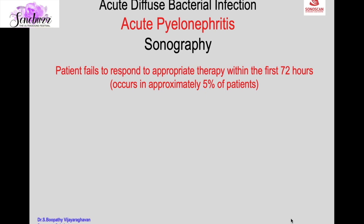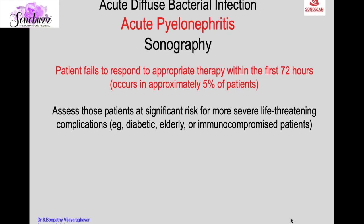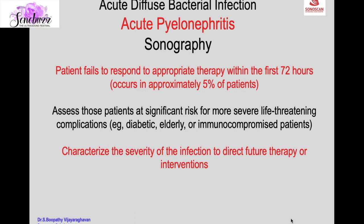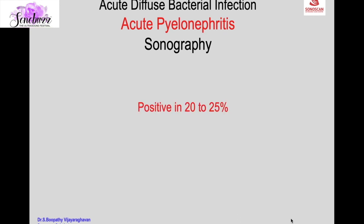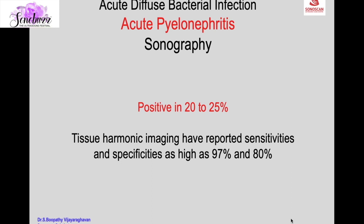Ultrasound is required when the patient fails to respond to appropriate therapy within the first 72 hours, occurring in approximately 5% of cases of acute pyelonephritis. Its role is to assess patients at significant risk for severe life-threatening complications like diabetes, elderly, or immunocompromised patients, and to characterize the severity of infection, direct future therapy or interventions, and evaluate the extent of organ damage subsequent to resolved acute infection. Ultrasound is positive in 20 to 25% of acute pyelonephritis; tissue harmonic imaging has improved sensitivity and specificity.